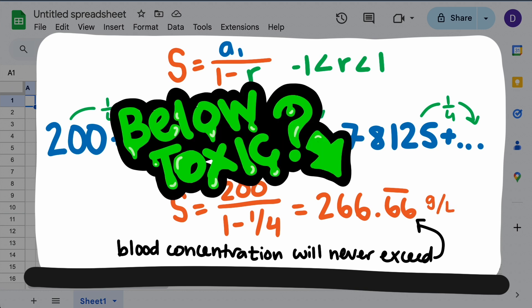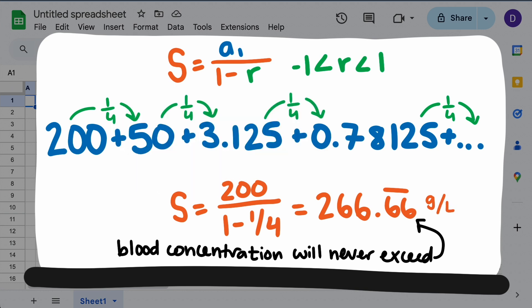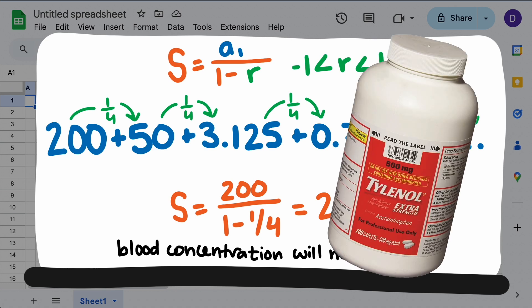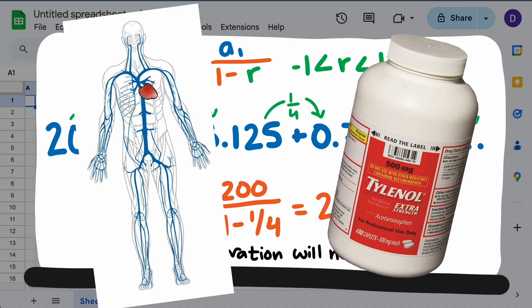So, if this is below toxic levels, then there won't be an issue. Although for Tylenol and other medications, the total amount your body processes is a bigger issue than the blood concentration.